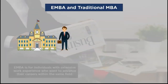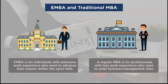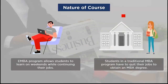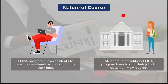Now let's look at differences between the executive MBA and the regular full-time MBA. The first parameter is the expected student profile. The EMBA is intended for seasoned individuals with extensive work experience who want to advance within the same field, while a regular MBA is for professionals with only a few years of experience looking to enter business management or alter their career paths. The average age for EMBA applicants is 38 years, compared to 28 years for standard full-time MBA applicants. Additionally, traditional MBA students must quit their jobs, whereas EMBA students learn on weekends while continuing to work.